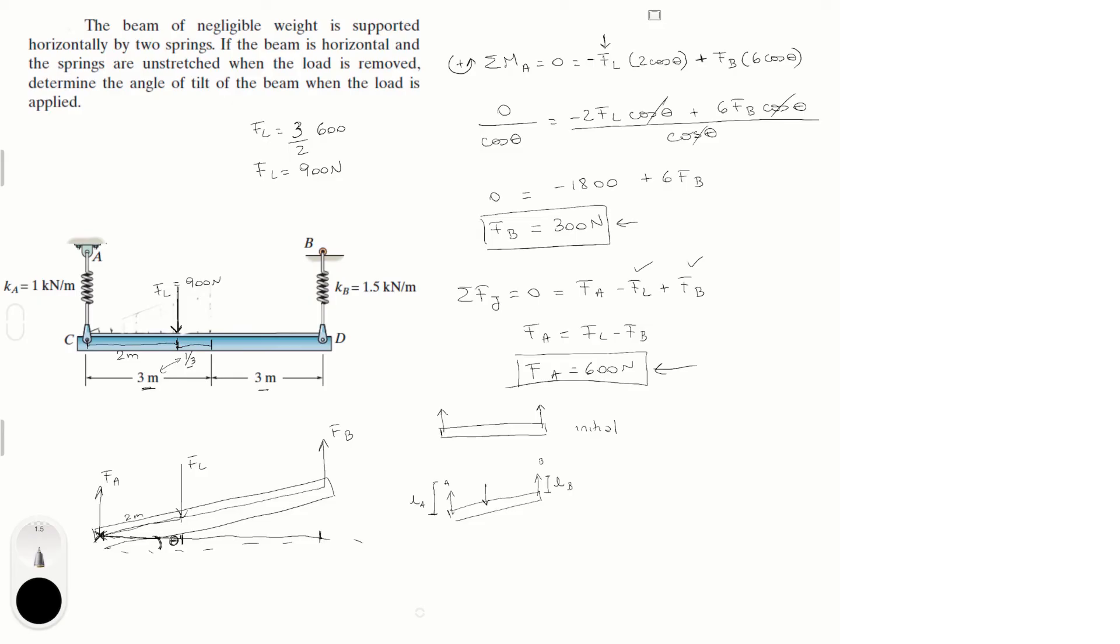You know that F_B is equal to K_B times L_B. This is the force exerted by a spring. It's equal to the constant of force times the distance traveled, in terms of the distance that the spring is extended. We know F_B, right? We know F_B is 300 newtons. We know K_B because it's given by the problem as 1500 per meter and we don't know L_B. So if you solve for L_B, you're going to get that this is equal to 0.2 meters.